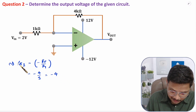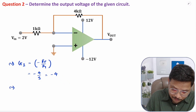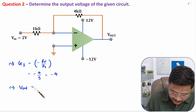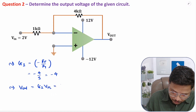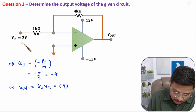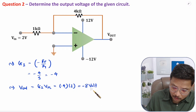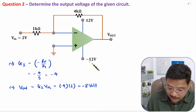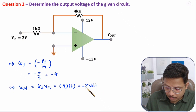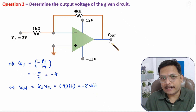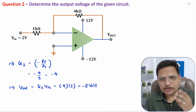Now we have the gain, so we can easily calculate Vout based on the input voltage. Vout is gain into input — gain is minus 4 and input is 2 volts, so output will be minus 8 volts. Here, minus VEE is more than this, so this output is possible. Let us move on to the third question now.